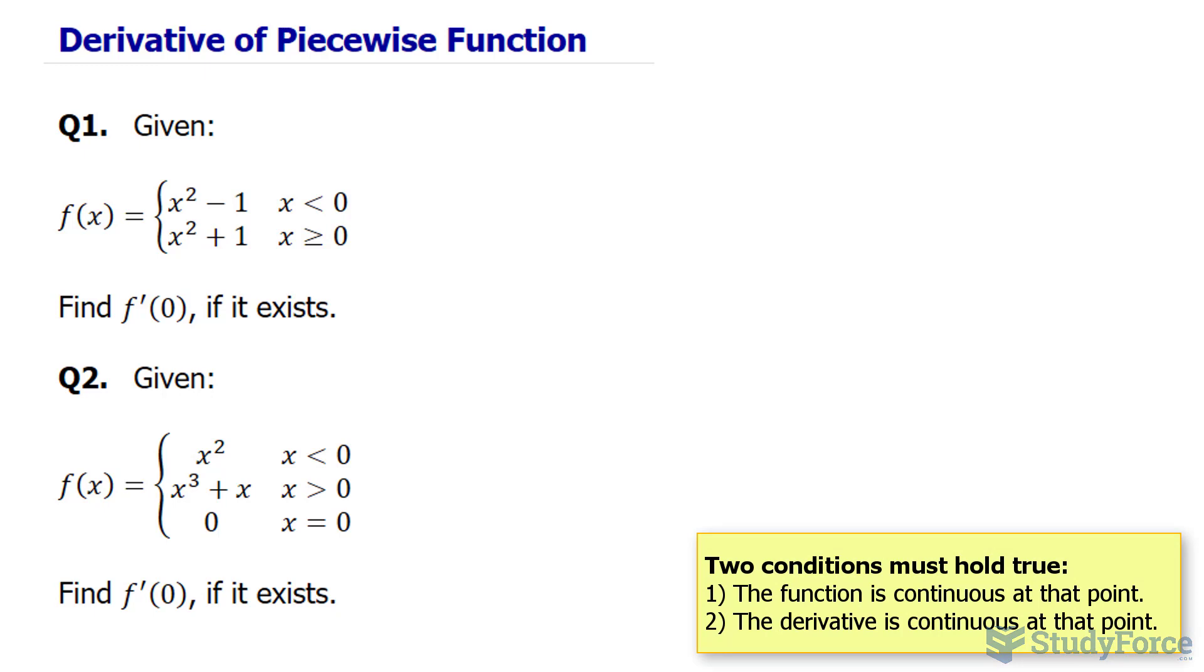The first being that the piecewise function is continuous at the point of interest, in this case where x is equal to zero. If the first condition passes, then the second condition says that the derivatives must also be continuous.